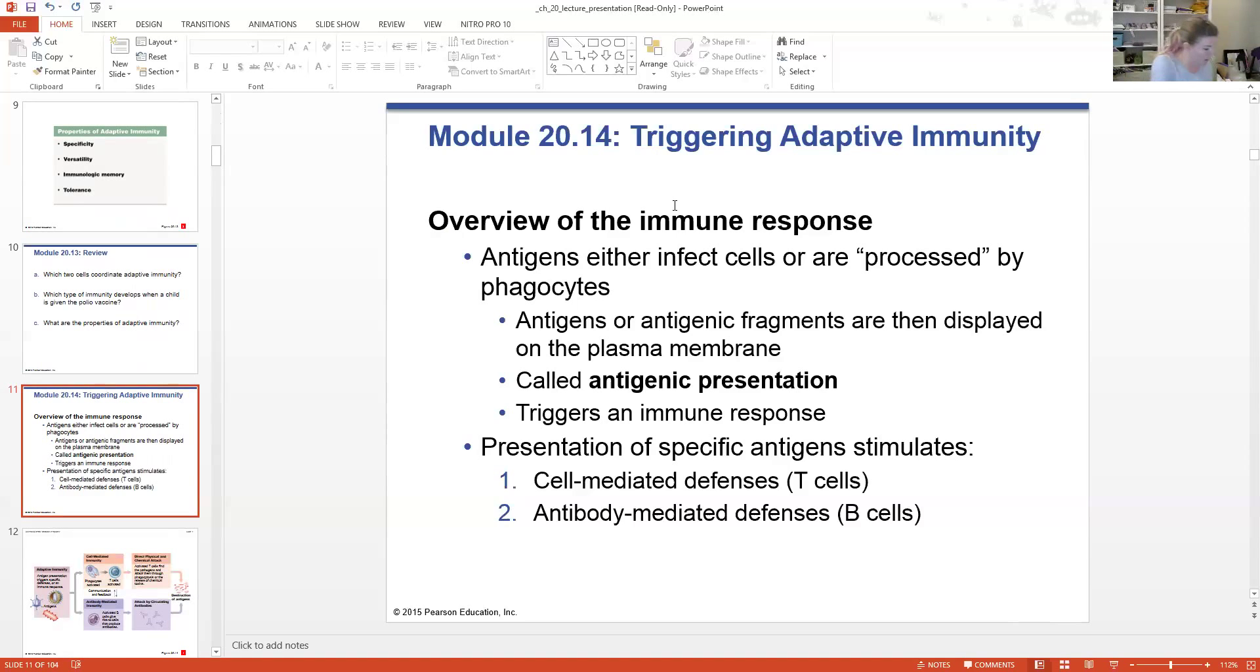The four properties of adaptive immunity: specificity, versatility, immunologic memory, and the fourth one is tolerance. The immune response is going to ignore your own cells but target those non-self cells. This tolerance can actually develop over time with an exposure to an antigen that kind of lays around for a while. That's how some diseases can actually go undetected for a very long time. Your body's not recognizing it as a pathogen. So, tolerance, memory, versatility, specificity, four main properties of adaptive immunity.